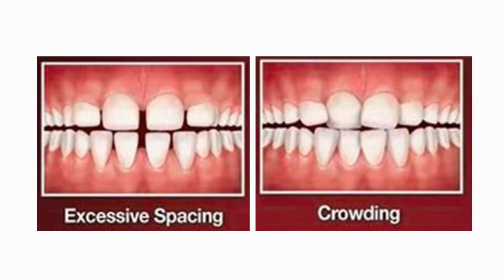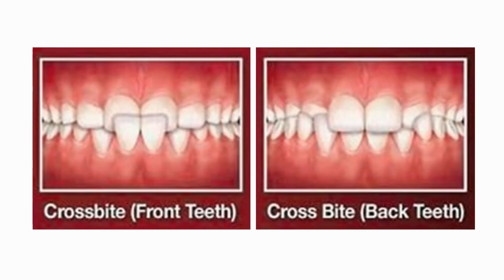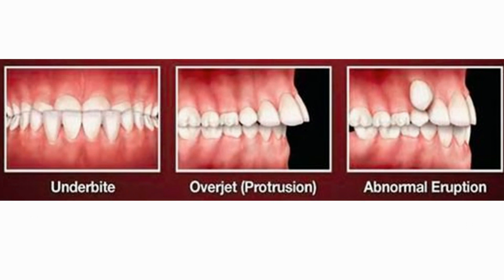Types of different malocclusion which may occur include: excessive spacing between teeth, crowding of teeth, open bite (in which there is no occlusion between teeth, may be anterior or posterior), overbite (the upper anterior teeth fully cover the lower anterior teeth), crossbite (opposite relation between lower and upper teeth, may be anterior crossbite or posterior crossbite), underbite (lower teeth occlude anterior to upper teeth), and overjet (protrusion of upper anterior more than four millimeters), as well as abnormal eruption.